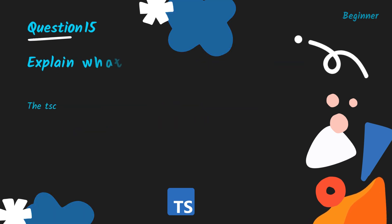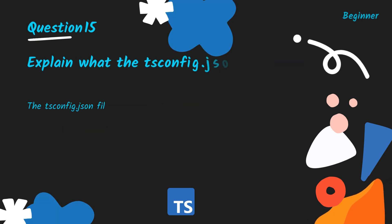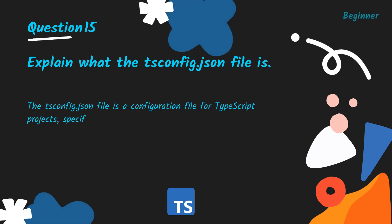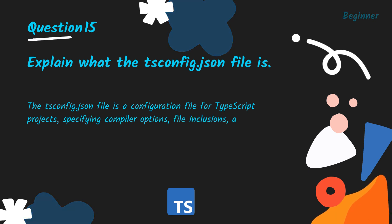Explain what the tsconfig.json file is. The tsconfig.json file is a configuration file for TypeScript projects specifying compiler options, file inclusions, and other settings.